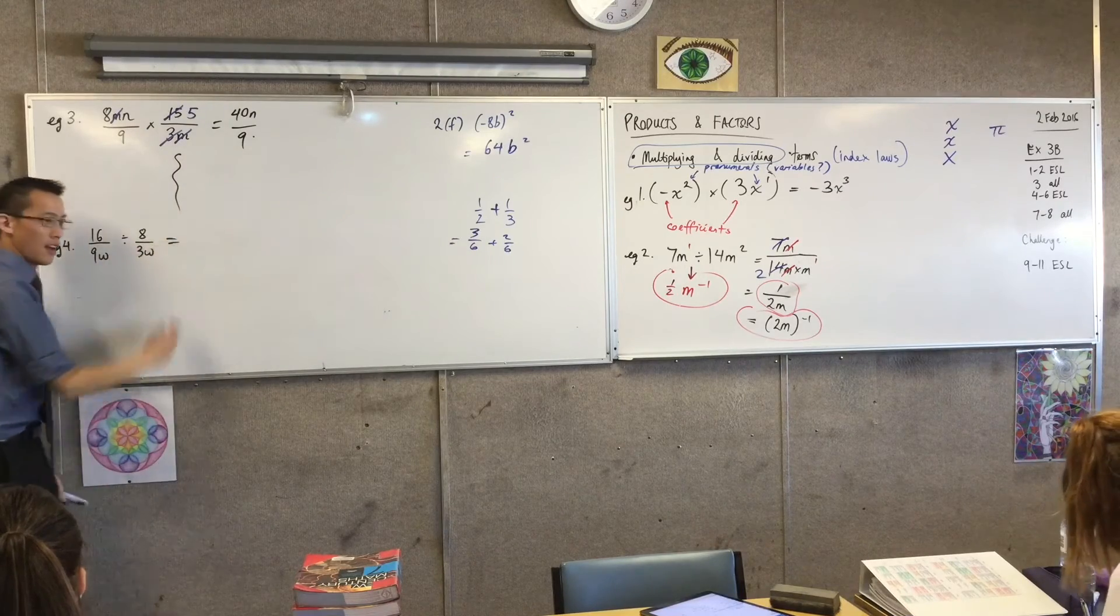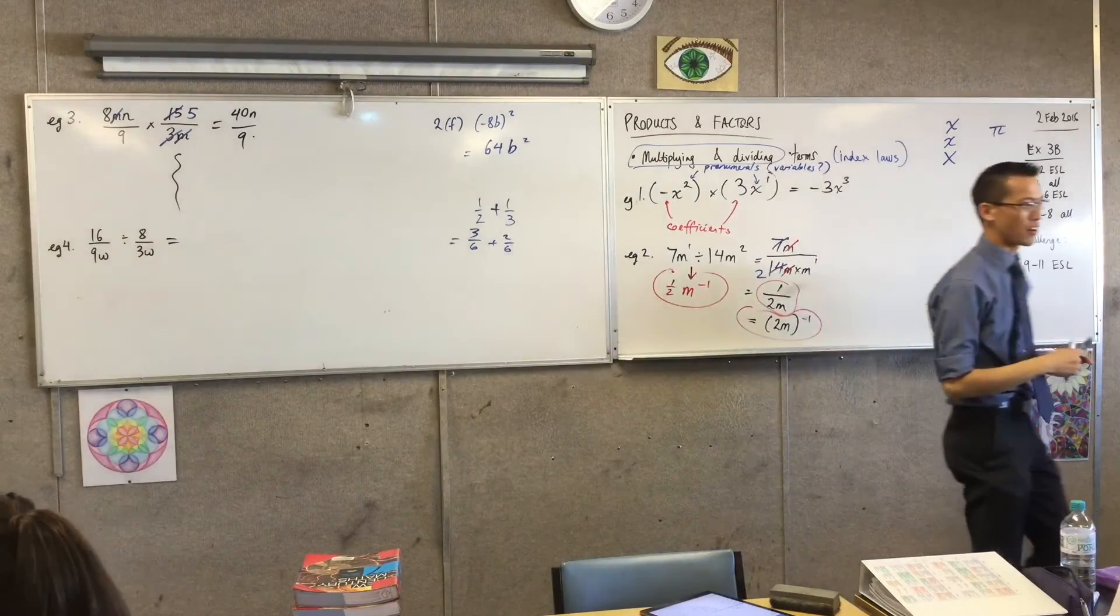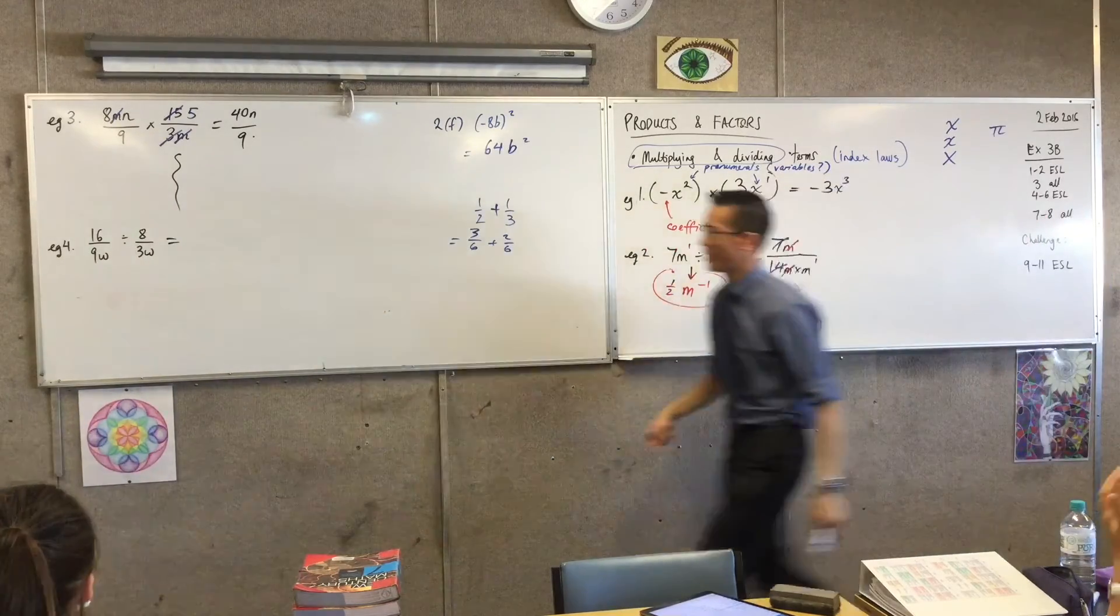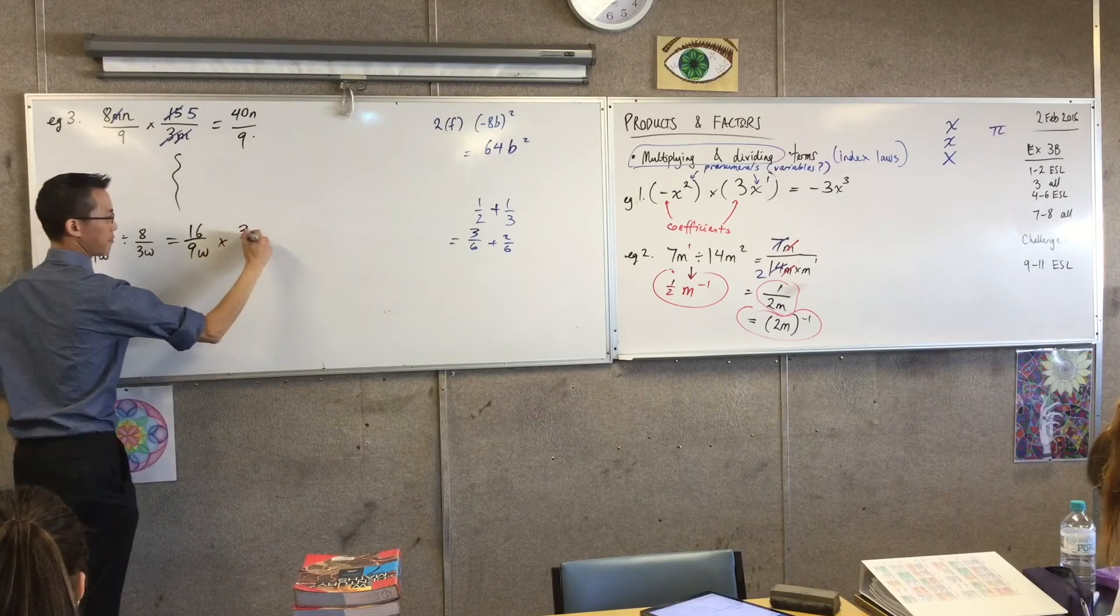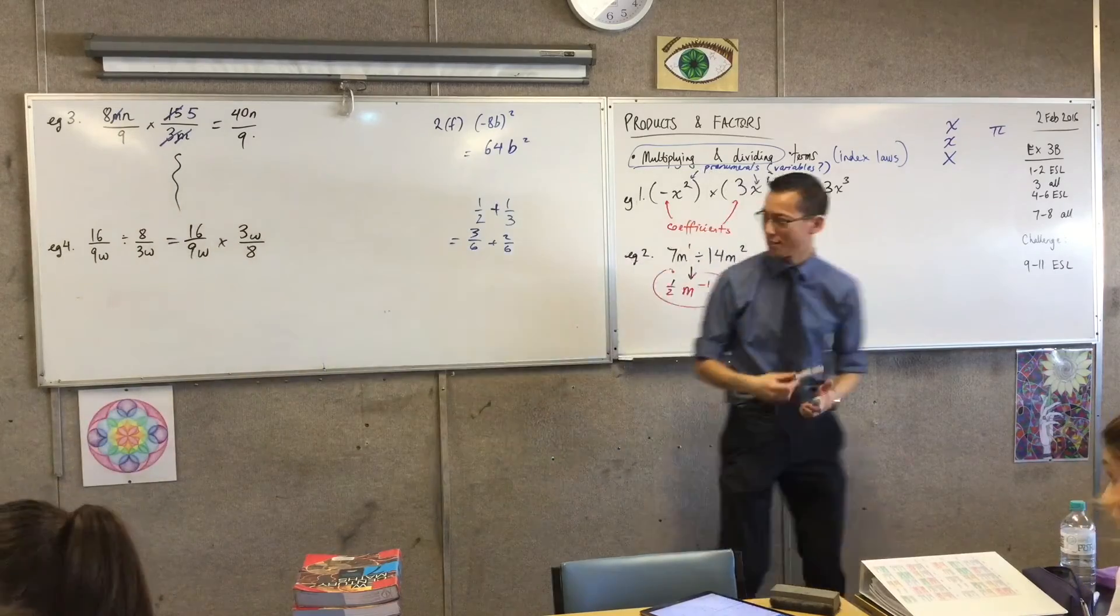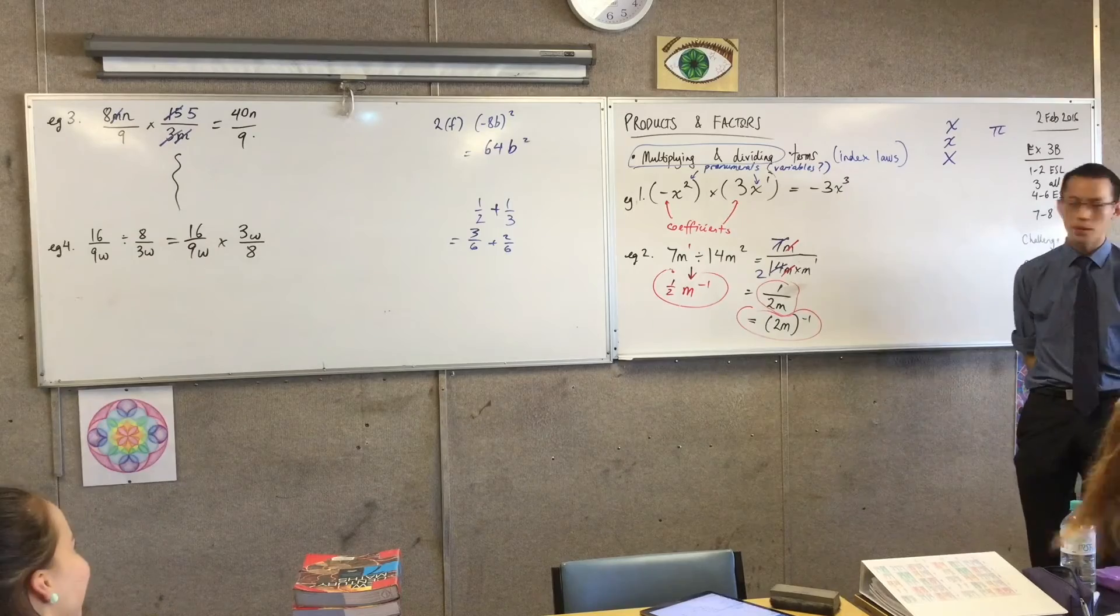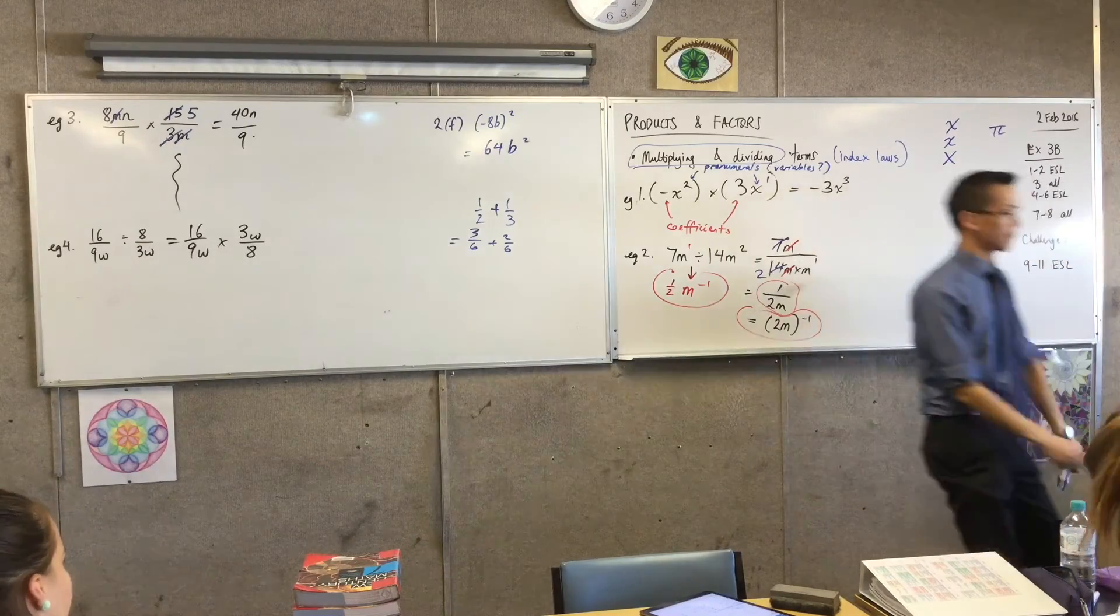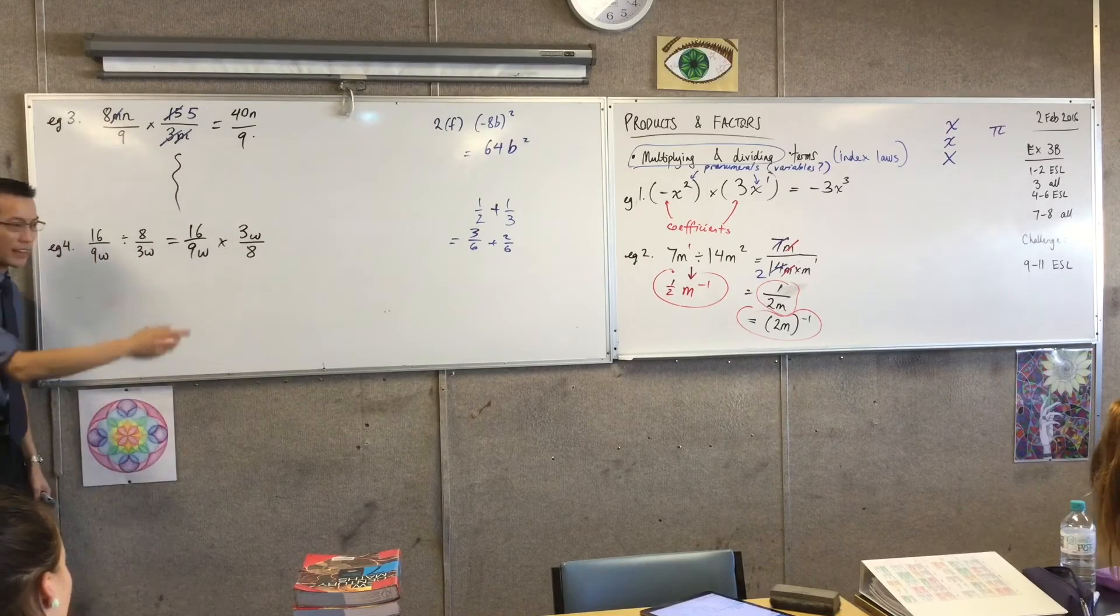Now here we remember that division is... What do you do before we turn it into a product? We flip it upside down. So this is in fact equal to this. So channel your inner Mr. Wu as a child. Like why do that? Seriously, why do we flip it upside down? So you can cross off the 3 and the 9 and make it easier. And you can do 16 and 8.